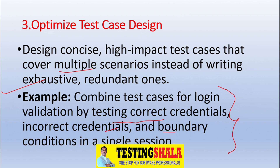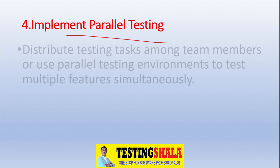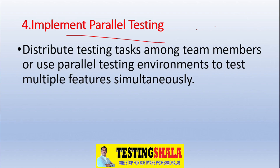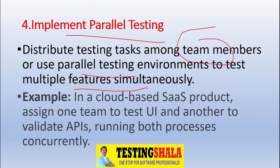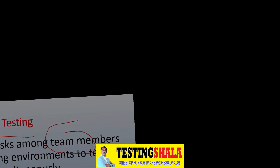The fourth step is parallel testing, which is also very crucial. We should distribute testing tasks among team members or use parallel testing environments to test multiple features simultaneously. For example, in a cloud-based product, assign one team member to test the UI and another team to validate the API, running both processes concurrently to deliver the software more quickly.